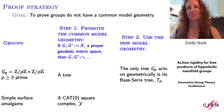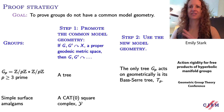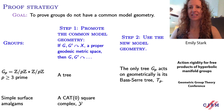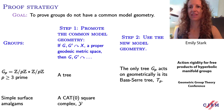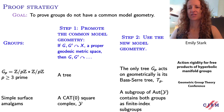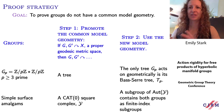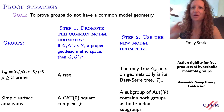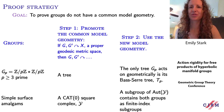Simple surface amalgams have many natural geometries associated to them. With Woodhouse, we showed that if two simple surface amalgams act on the same proper geodesic metric space, then they act on the same two-dimensional CAT(0) cube complex that has a natural tree of spaces decomposition. This is helpful because we could analyze the structure of the cube complex and its automorphism group, and show there's some subgroup of the automorphism group that contains both simple surface amalgams as finite index subgroups.